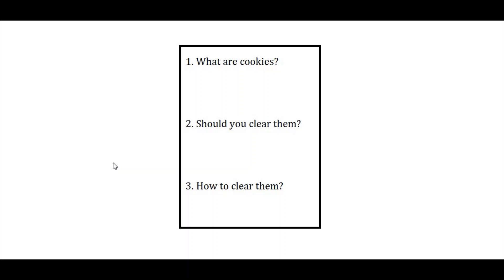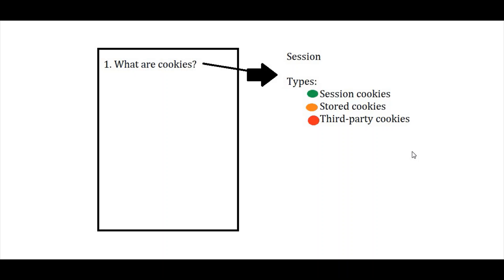So we'll start with what cookies are. You might have noticed that sometimes when you visit a certain web page, a pop-up appears, usually in the top right corner of the browser. You click on it and there'll be a few options such as accept or allow. You click on it and then you can start using the website. Sometimes a message appears that this site is saving or accepting cookies.